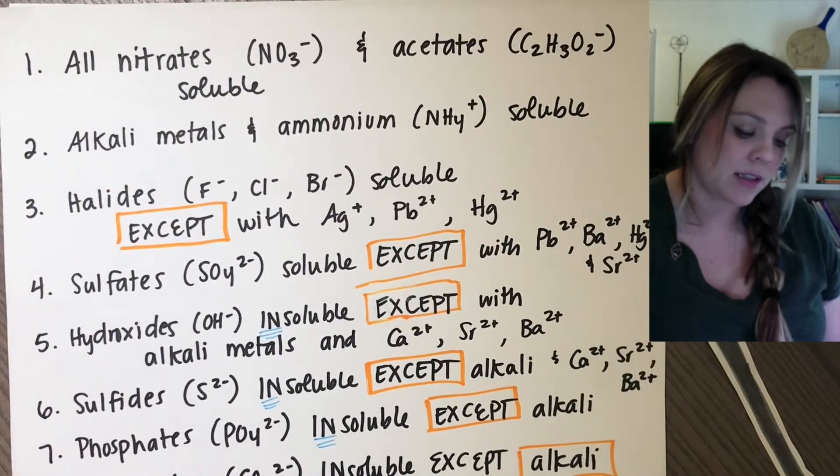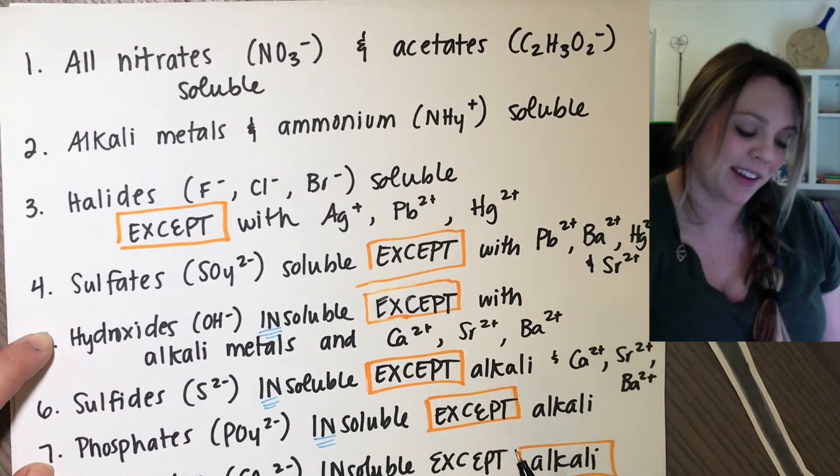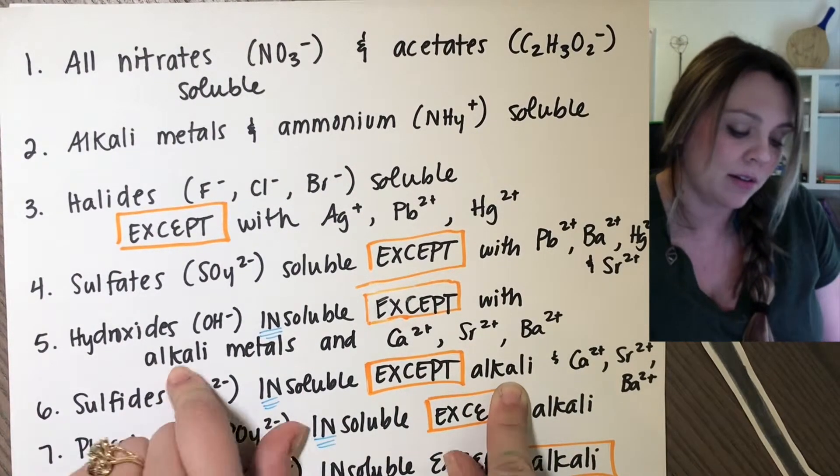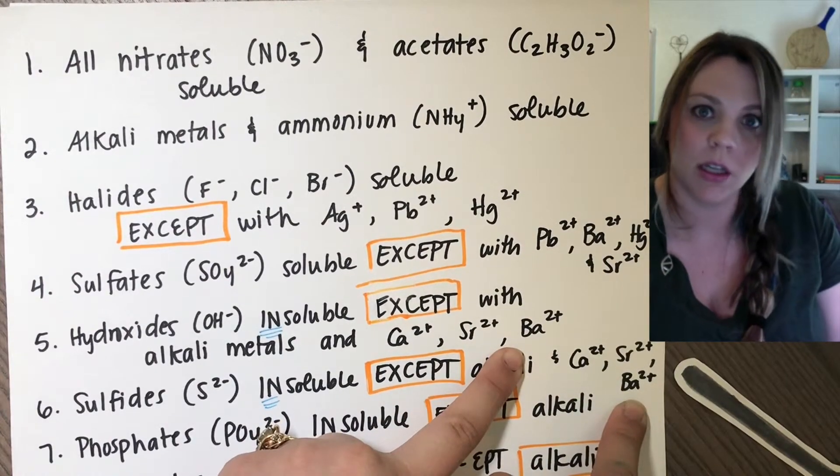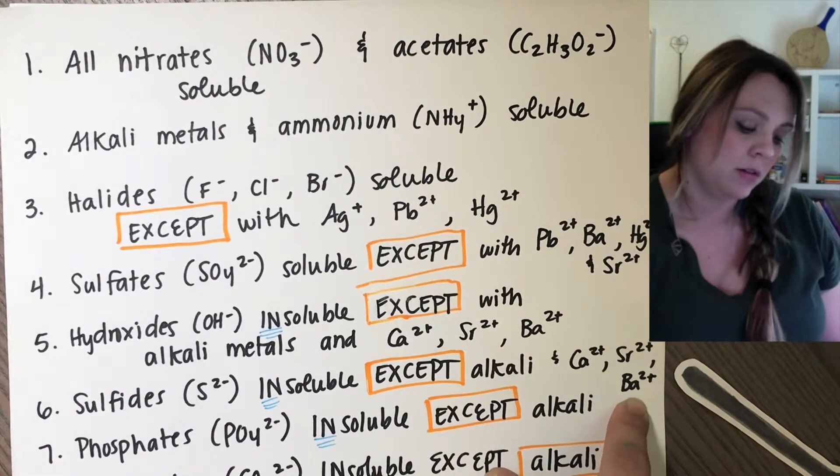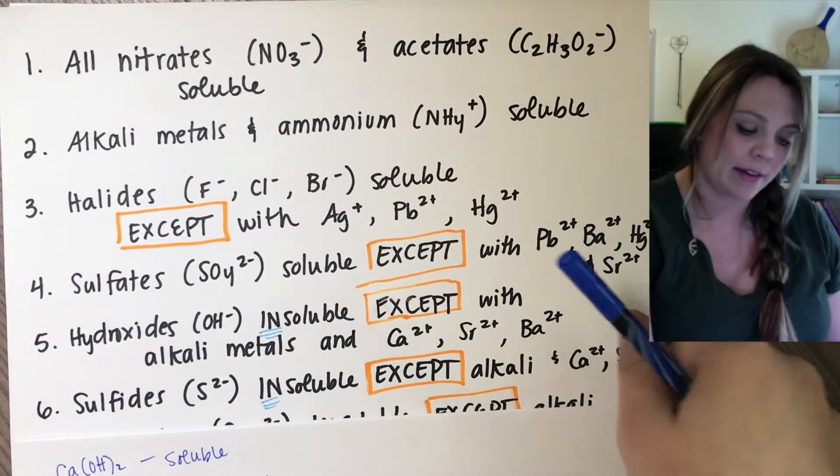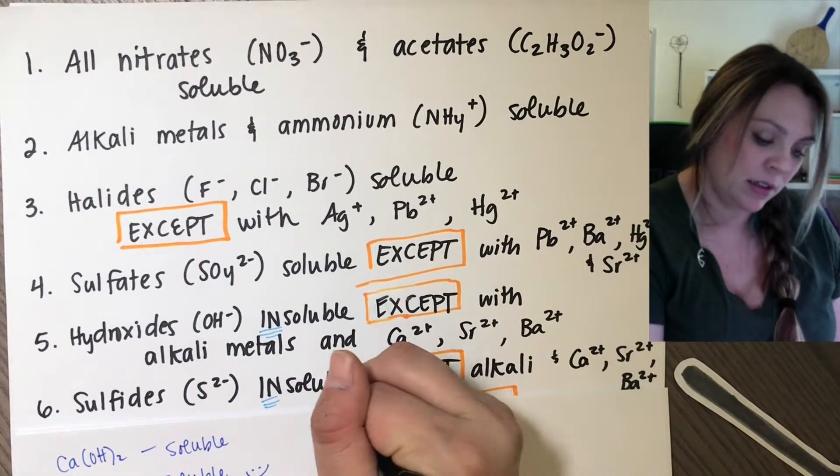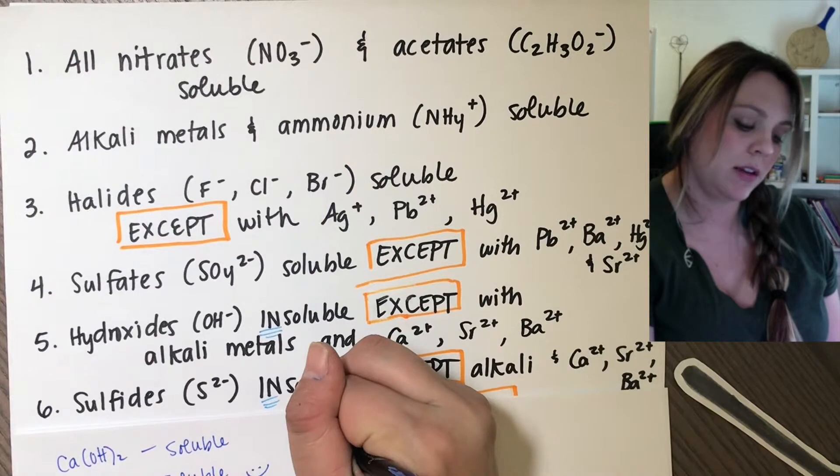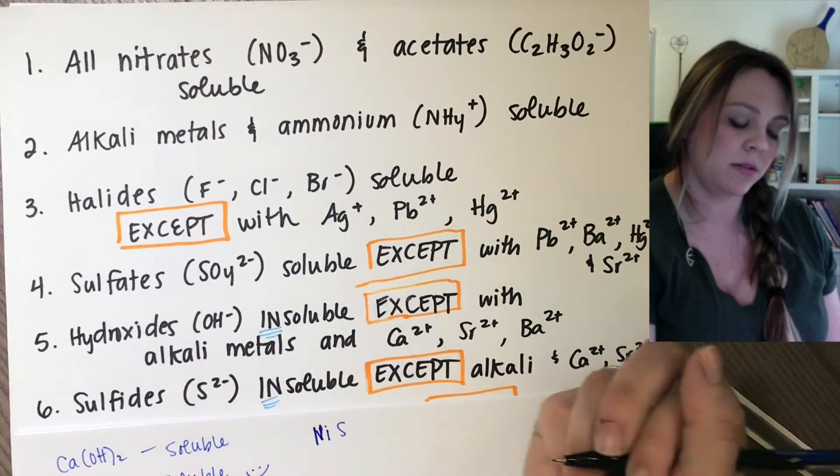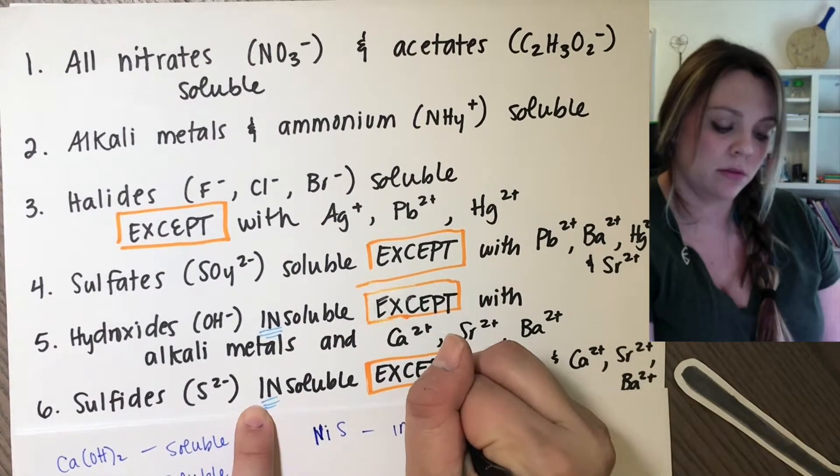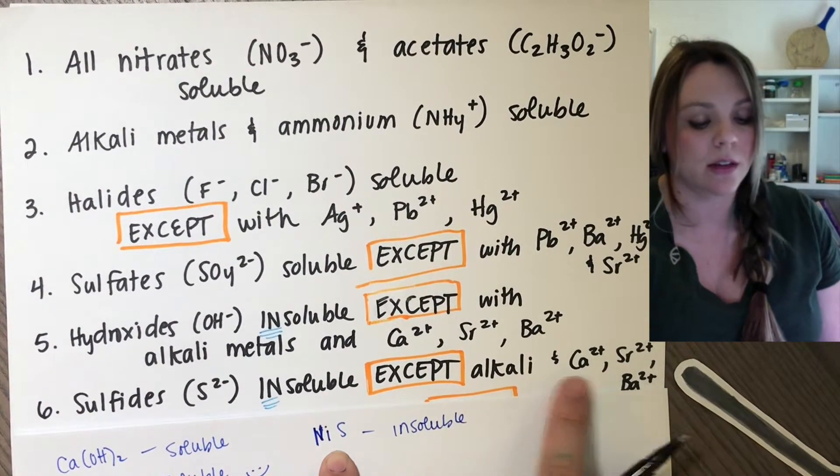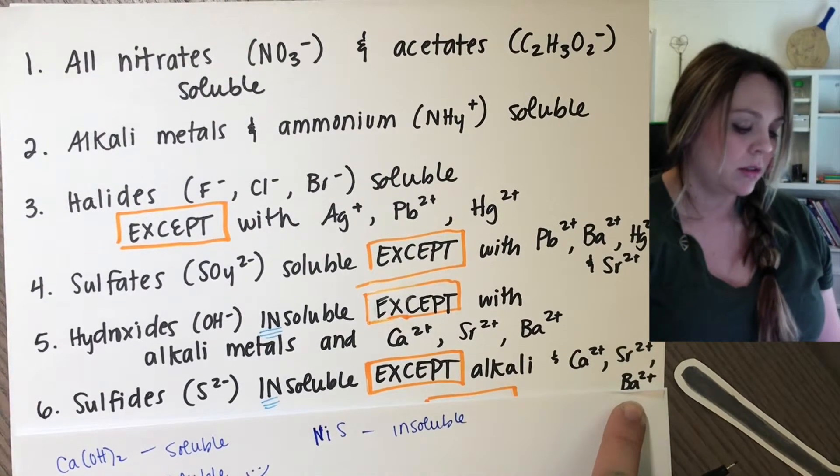Now, number six is almost exactly like number five, if you notice. So sulfides are insoluble unless it's bonded to an alkali metal, calcium, strontium, or barium. Literally the same exceptions. So if I had nickel two sulfide, NiS, nickel two sulfide, that's insoluble because sulfides are insoluble and nickel is not an alkali metal. It's not calcium, strontium, barium.